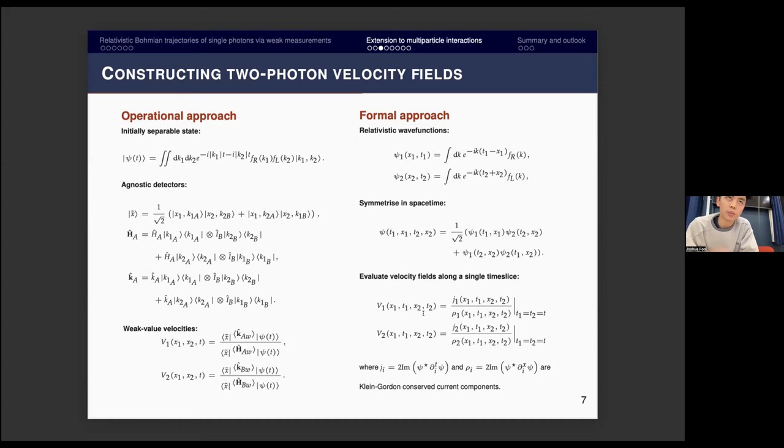From the formal approach, which may be more conceptually straightforward, we've got our relativistic wave functions, a right-moving one and a left-moving one. Because the particles are bosons, we can symmetrize them in position and time, and we obtain this symmetrized wave function. We construct these Bohmian-type velocity fields using our Klein-Gordon conserved current and density, and we evaluate them on a particular time slice. This is a particular choice to match up with our operational approach. The way that detectors would operate on a single time and then move forward in time performing the weak measurements so they can keep track of the particles and interpolate their trajectories.